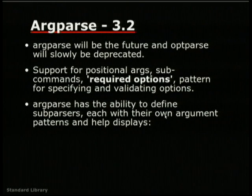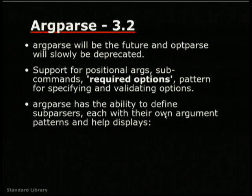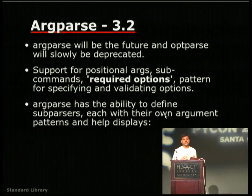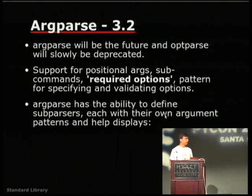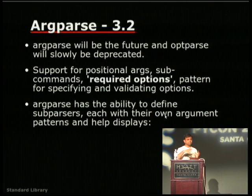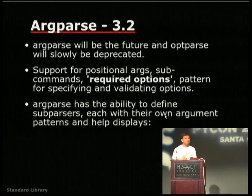A new module from Python 3.2 is argparse. If you were already using argparse as a separate package, it's now included in Python 3.2 onwards and obviously available in Python 3.3. The older optparse will be slowly deprecated. argparse supports positional arguments and required options, and has the ability to define sub-parsers, each with their own argument patterns and help display. That's a pretty interesting feature that made its way into the standard library.